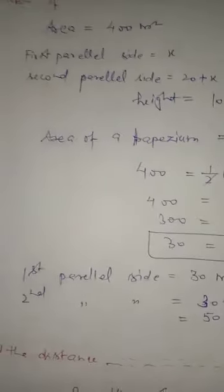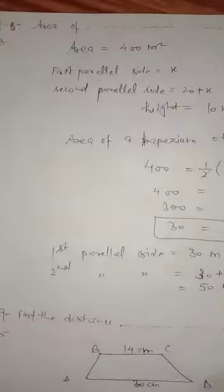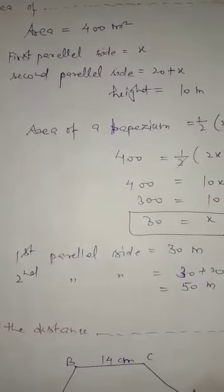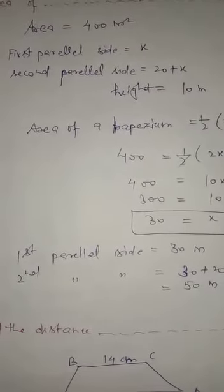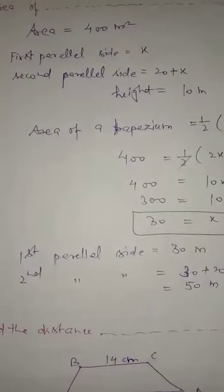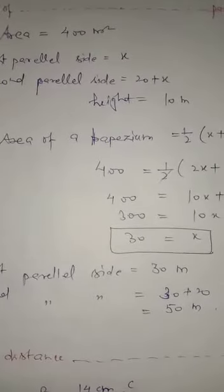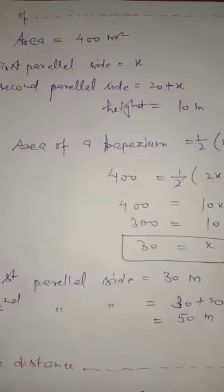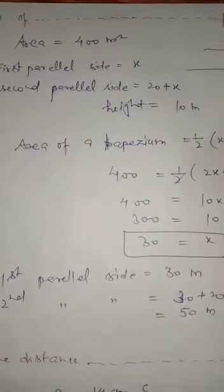Question 8: Area of trapezium is 400 square meters. One of its parallel sides is 20 meters longer than the other and height is 10 meters. Find its two parallel sides.